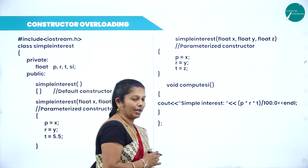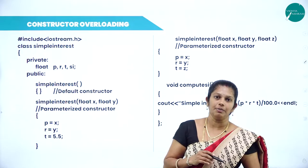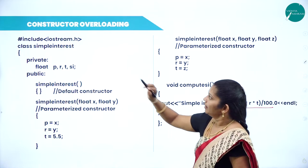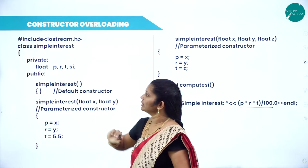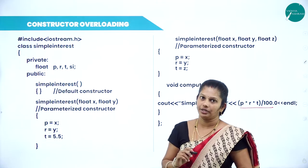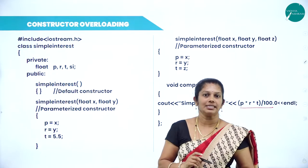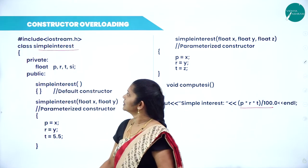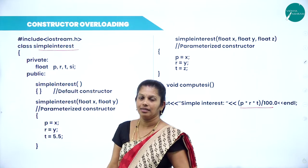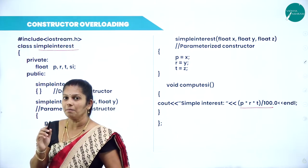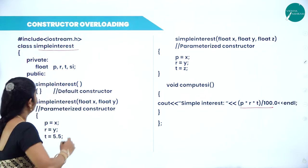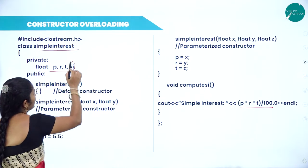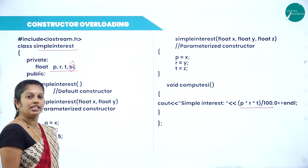Here we start with #include iostream.h, the supporting header file for cin and cout functions. The class name is given as 'SimpleInterest'. In the private section, we are declaring the variables p, t, r, and si to store the result.